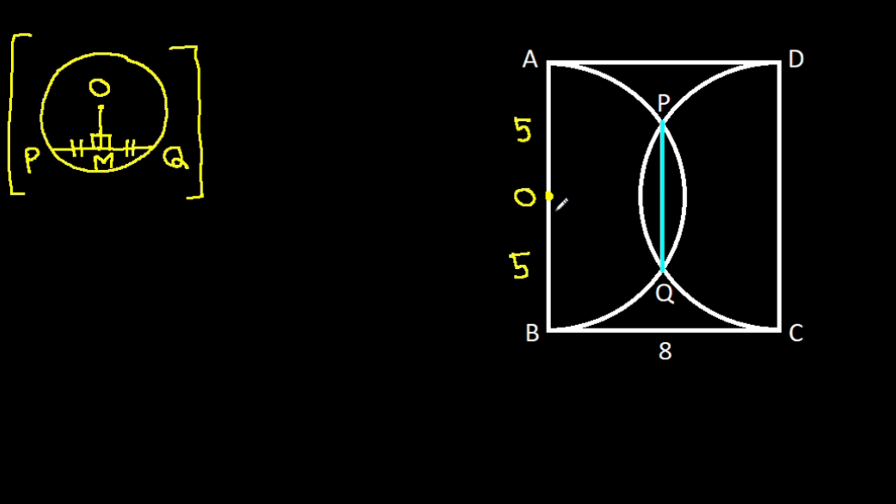So from point O, if we make a perpendicular on PQ, suppose this point is M, then PM will be equal to QM. And if we join OP, then OP is radius, that will be 5, so OP is 5.